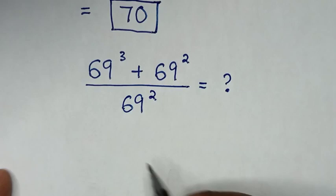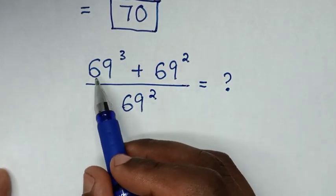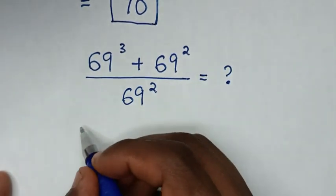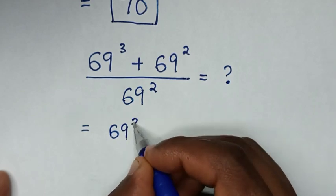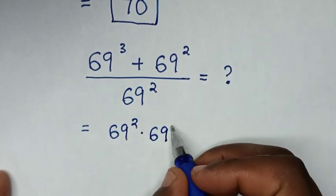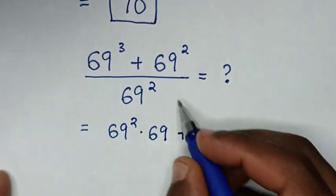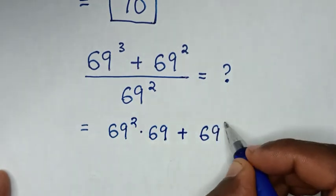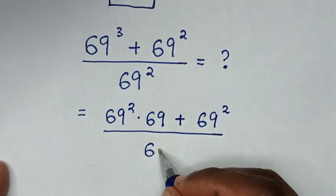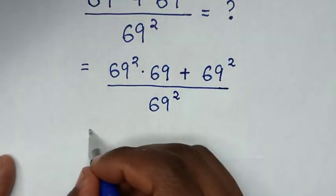In the numerator, we make 69 power 2 in common. So 69 power 3 is the same as 69 power 2 times 69, since power 1 plus power 2 is power 3. Then plus 69 power 2, all over 69 power 2.